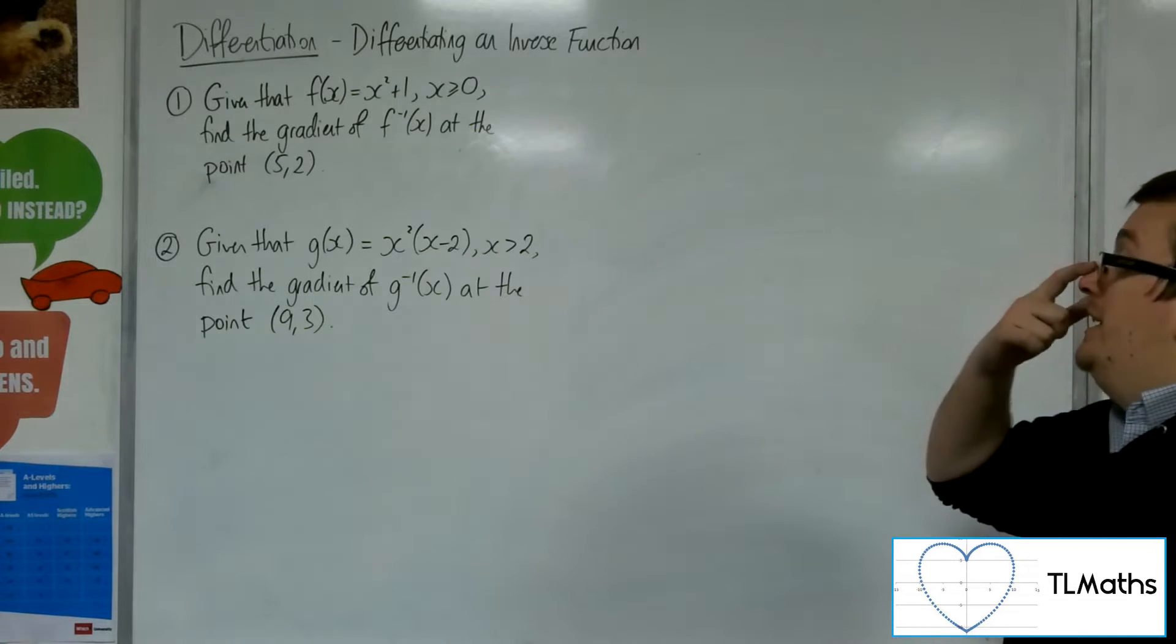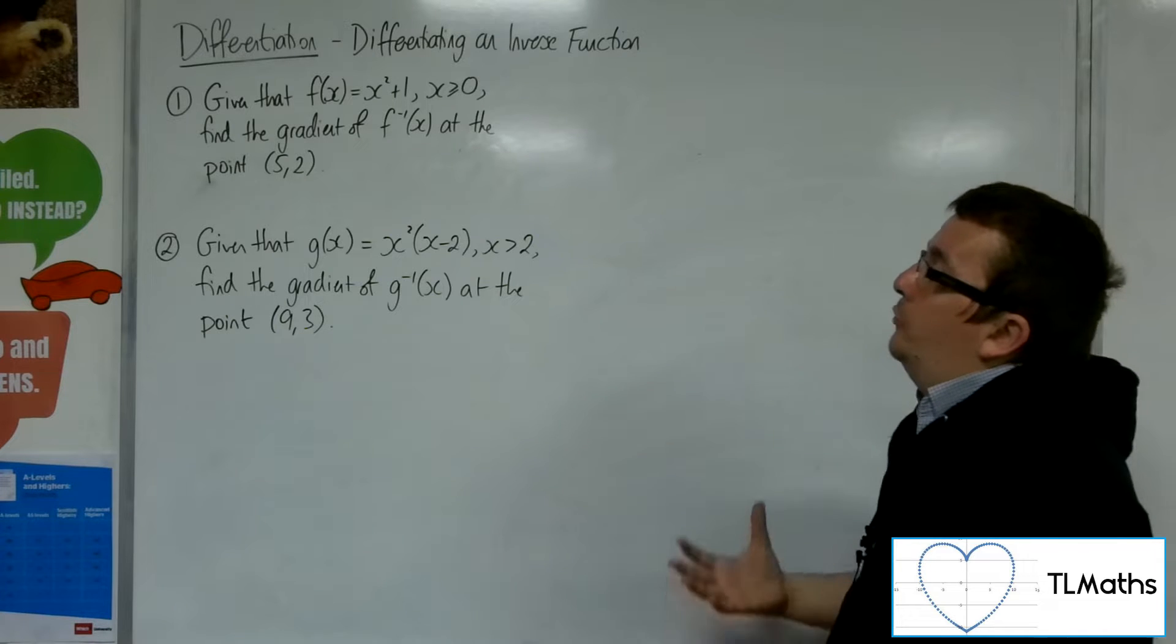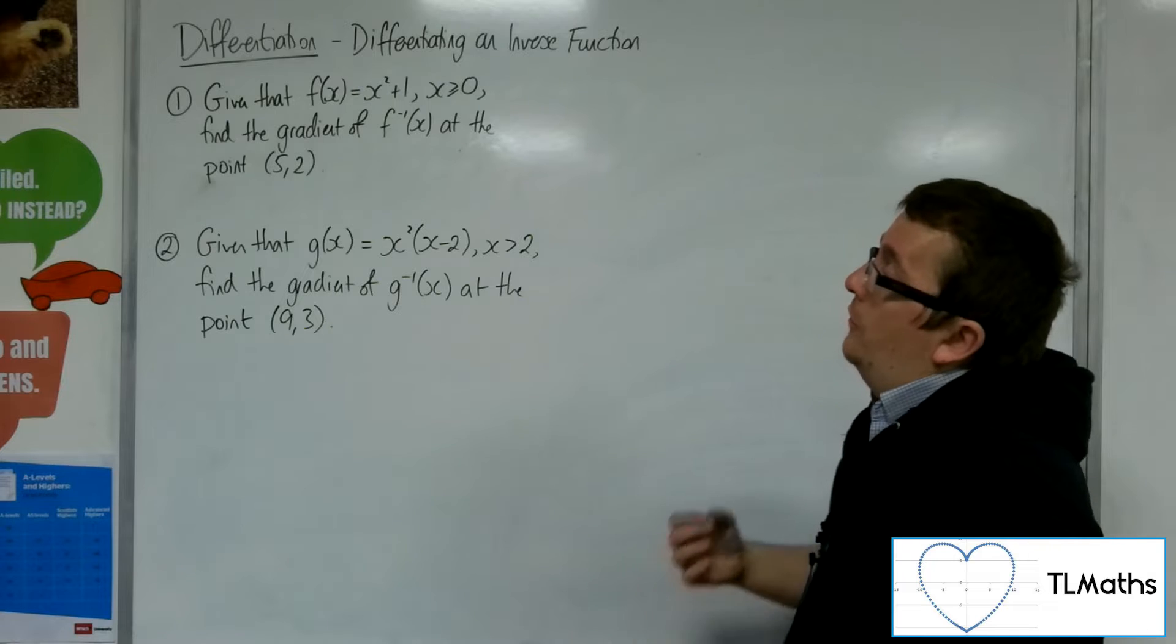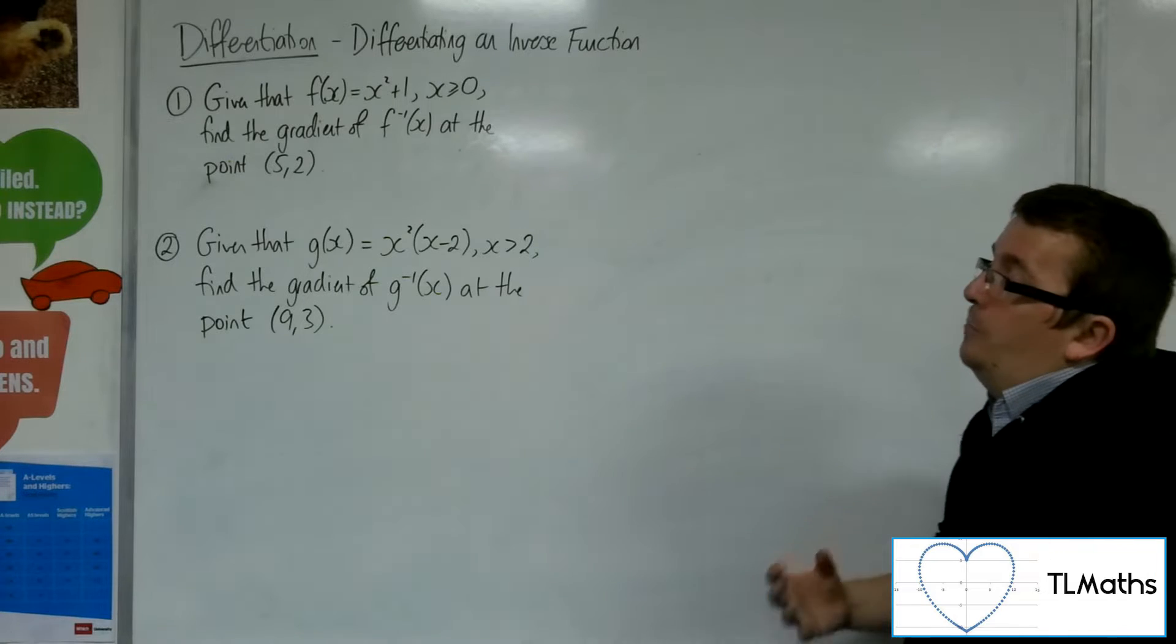So for number one, given that f(x) is equal to x squared plus 1, where x is greater than or equal to 0, find the gradient of the inverse function of f at the point (5,2).